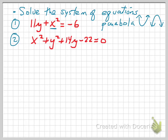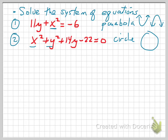The second equation is an x squared plus y squared equation, and we have the presence of both x squared and y squared with a common coefficient of 1. That tells us that it is a circle. The problem is that I don't know where the center of that circle is and I don't know what the radius of that circle is.